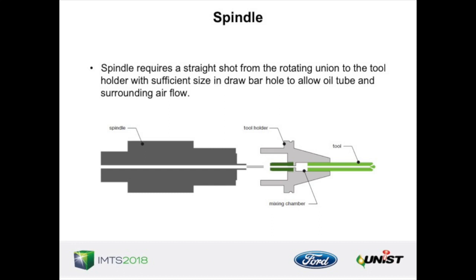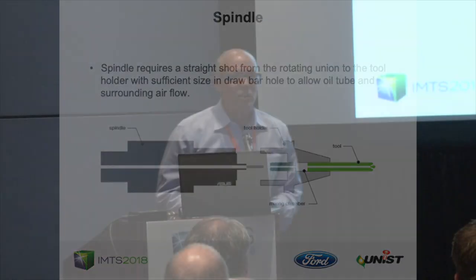Moving to the spindle: since we're inserting a tube down through the draw bar, a nice straight-line spindle is ideal. Articulating spindle designs don't work well for this. The tube also needs support along the spindle length to prevent vibration or harmonics. If there are tight constrictions at both top and bottom with a larger space between, you can't actually support the tube in the middle — so the spindle and draw bar must be designed to accommodate the tube with proper supports.